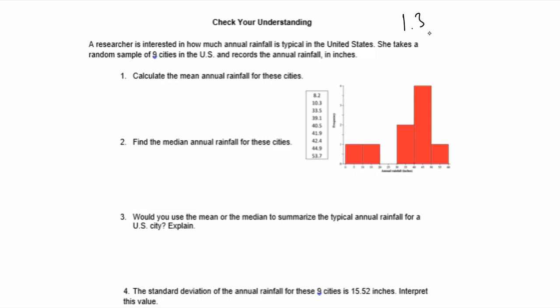So what we have right here is a researcher interested in how much annual rainfall is typical in the United States. She takes a random sample of nine cities in the U.S. and records the annual rainfall in inches. You can see these values right here laid out nice and neat from min to max. The histogram shows us that it appears to be slightly skewed.